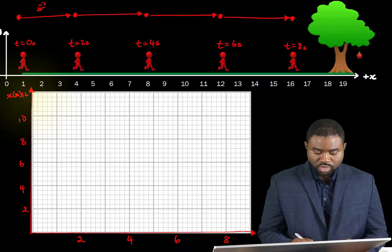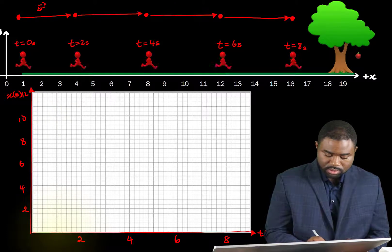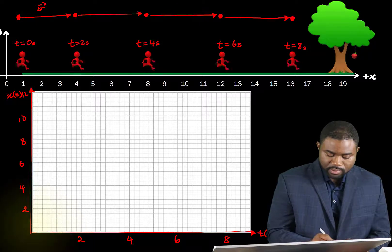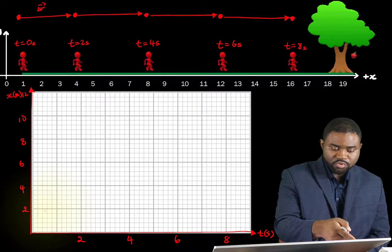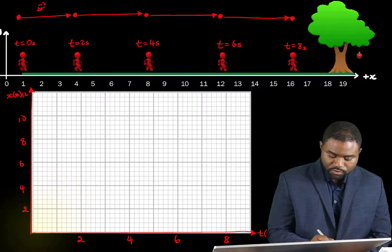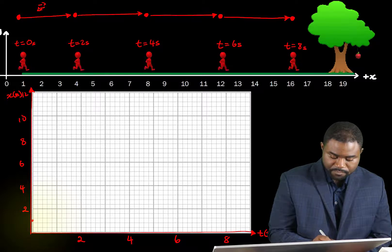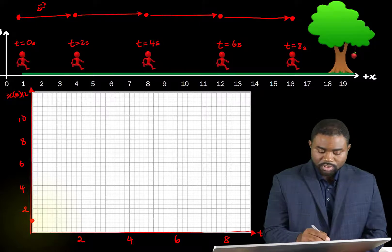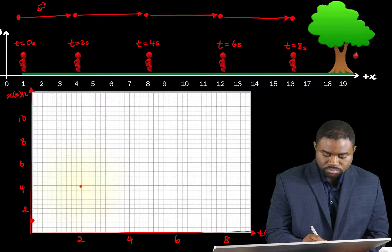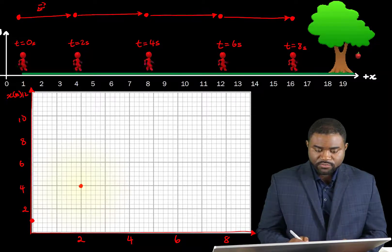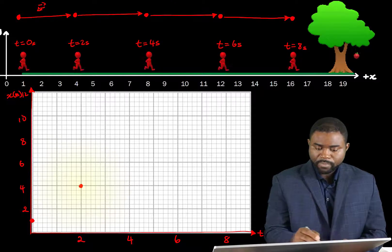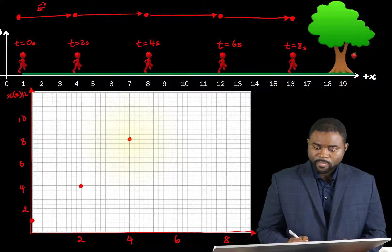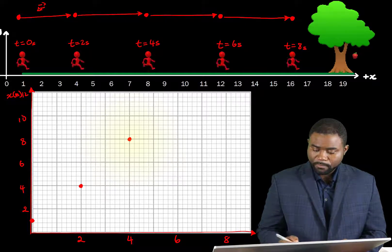So at t equal to one, remember that he starts moving at x equal to one, so this will be around here. At x equal to four, his time is two, that is around there. At x equal to eight, his time is four. At x equal to twelve, his time is six.